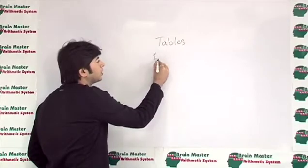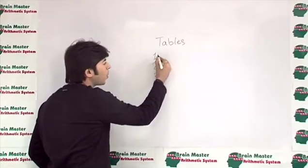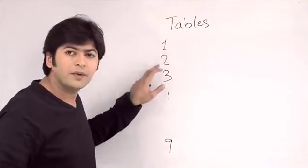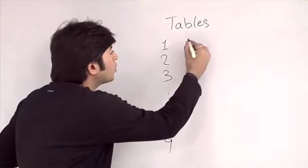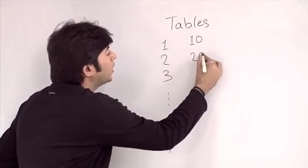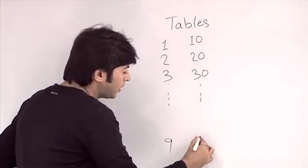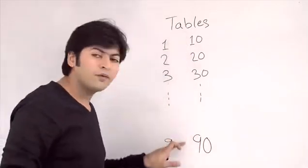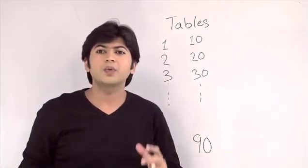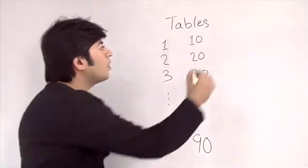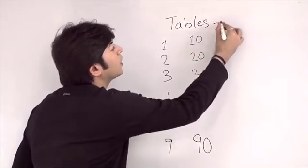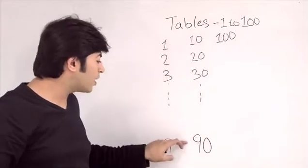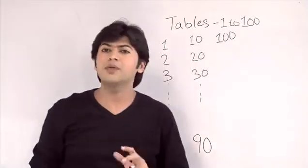As part of the tables, I know that you already know the table of single digits — 1 through 9. In the same way, we also know the tables of 10, 20, 30 up to 90, so we know 9 tables of single digit and 9 tables of two-digit multiples of 10. We also know the table of 100. So in total, we know 19 tables clearly.